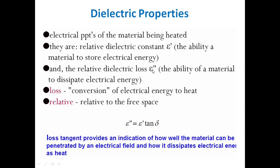The second property is relative dielectric loss (ε''), which is the ability of a material to dissipate electrical energy — meaning conversion of electrical energy into heat energy. This is the loss of electrical energy and the gain of heat energy. These properties are both expressed relative to free space (vacuum).